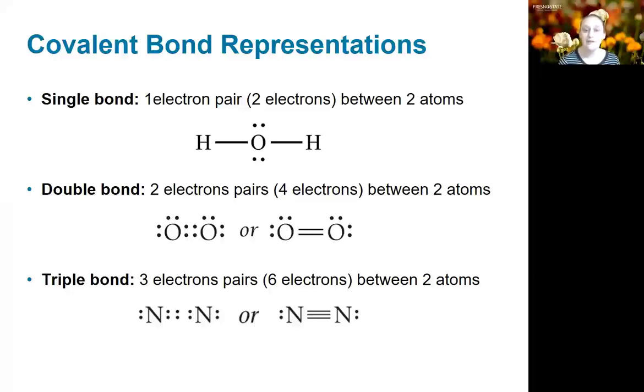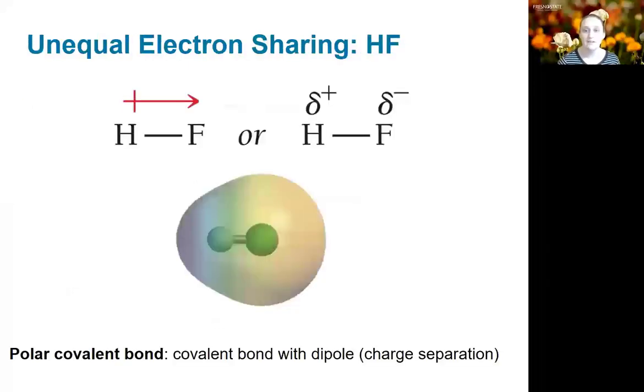Those electrons also don't have to be shared equally. If we have a molecule like hydrogen fluoride, where we have a hydrogen atom and a fluorine atom which are not equivalent—one has a much higher nuclear charge than the other—we end up with an unequal sharing. Fluorine wants the electrons more, it's going to pull them closer to itself. This creates this unequal charge distribution, which we call a dipole.